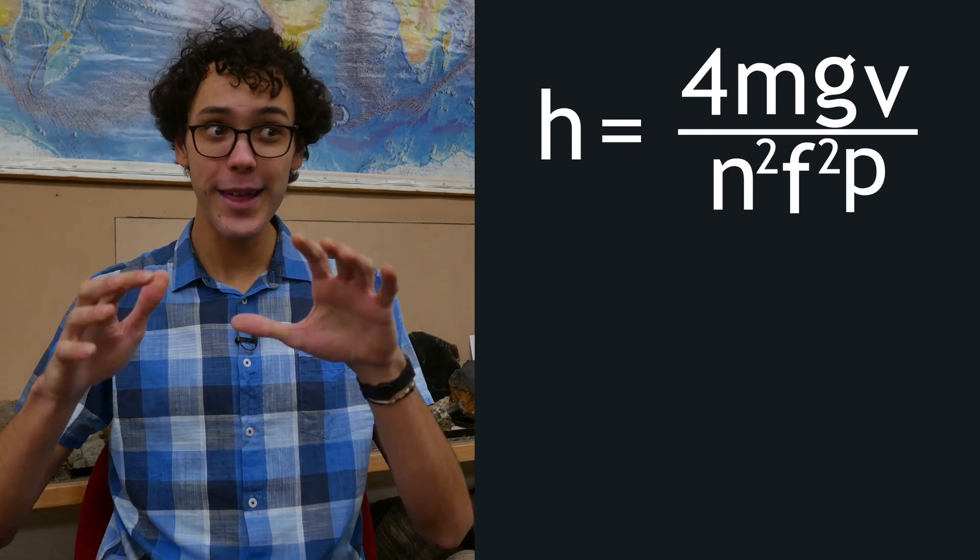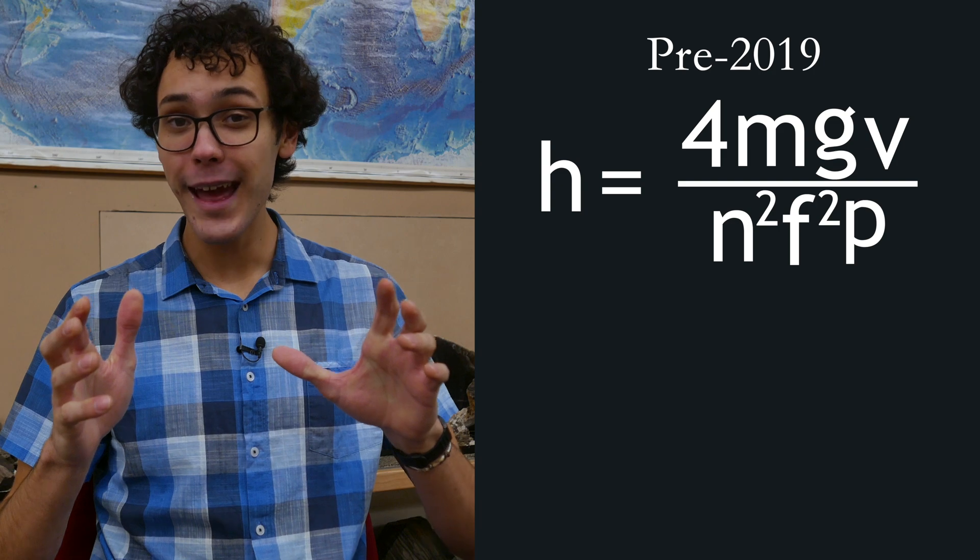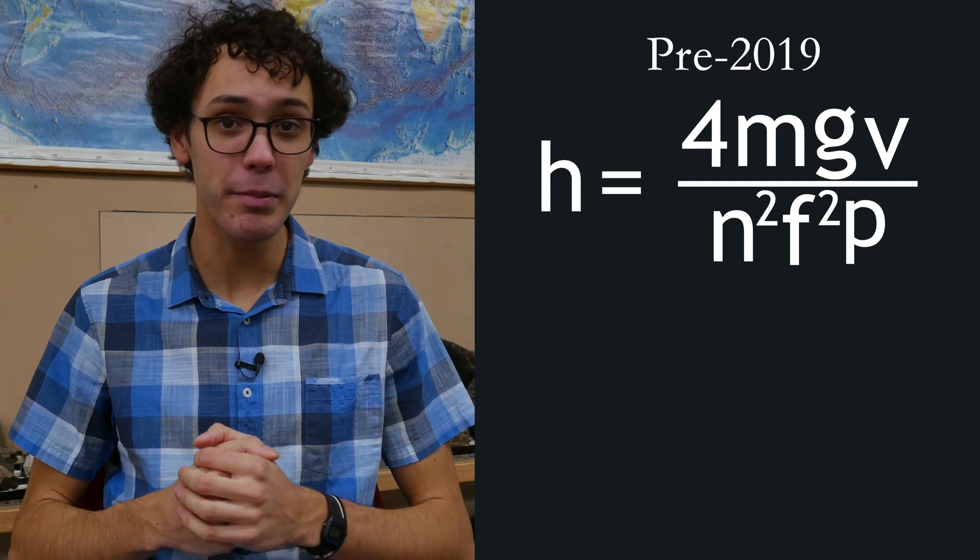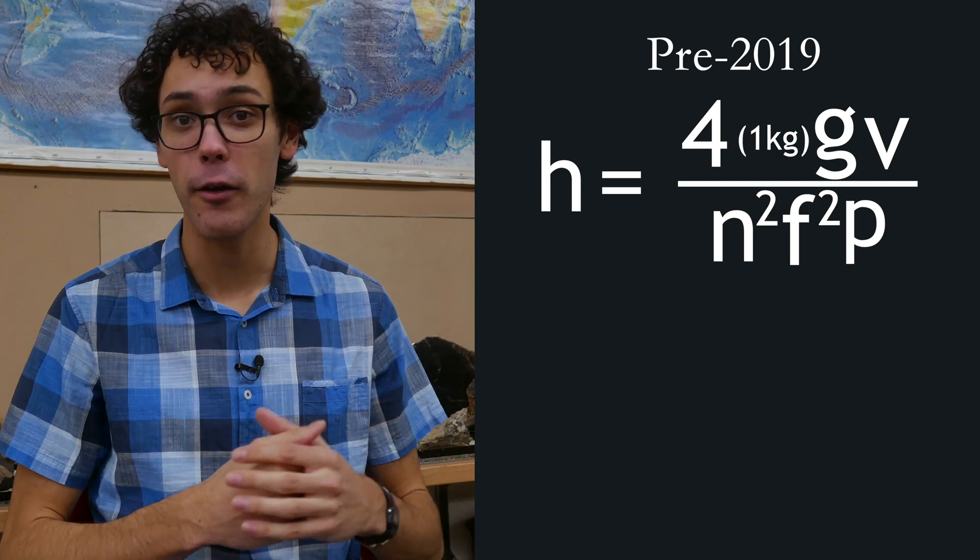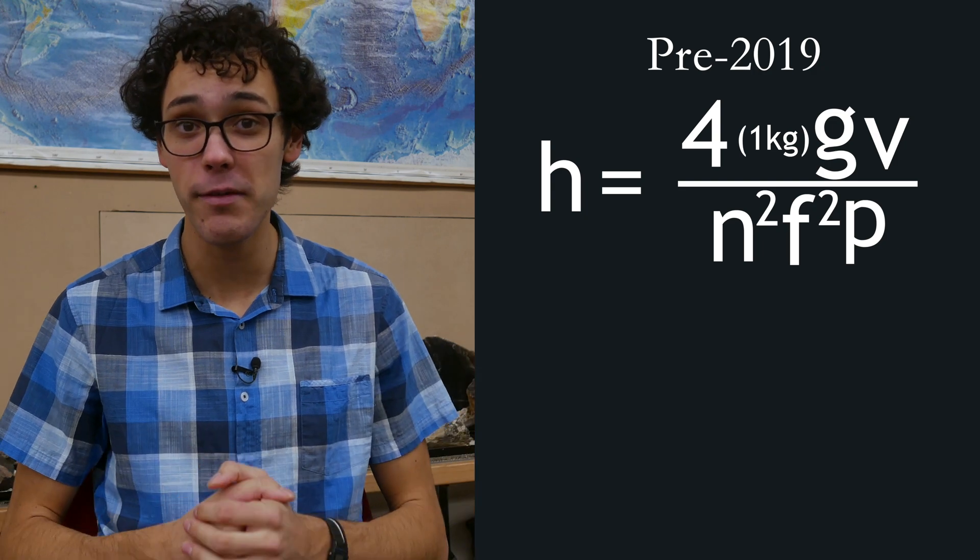So now that we know how to solve for each variable, now we can rearrange the equation and solve for h. Note that we can accurately determine each value. Prior to 2019, this would have been a way to measure Planck's constant. Just put a 1kg mass in, measure all the other values, and solve for h.